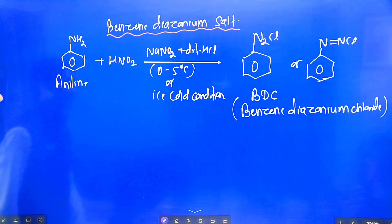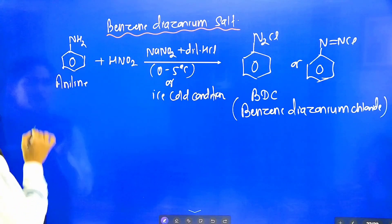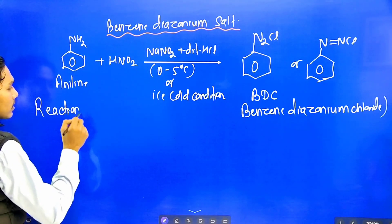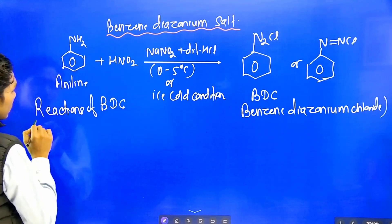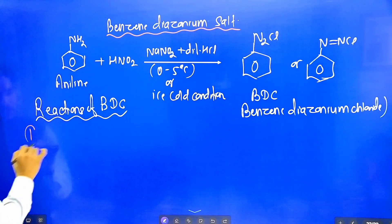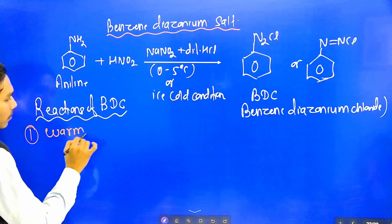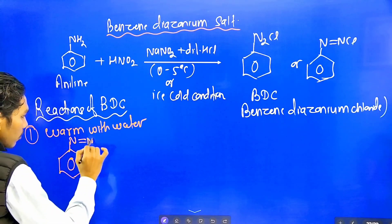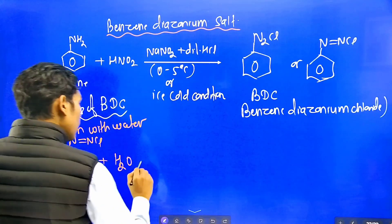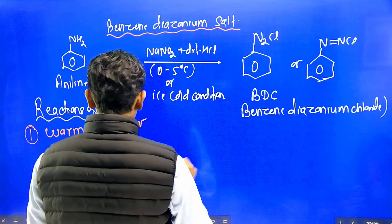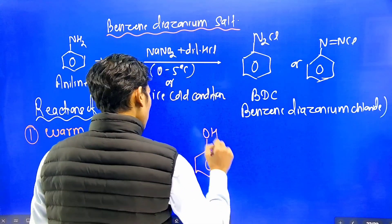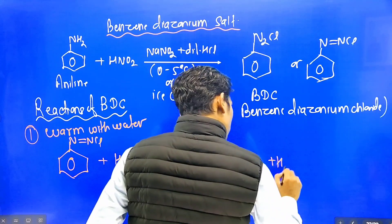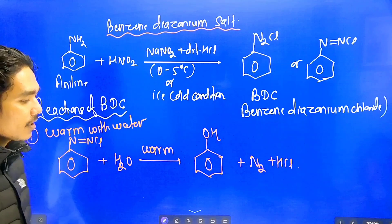Now let's discuss the main important reactions. What product would you expect? Let's discuss the reactions of benzene diazonium chloride. The first reaction is when we warm it with water. When benzene diazonium salt with N double bond NCl is warmed with water, the direct product formed is phenol plus N2 gas is released.